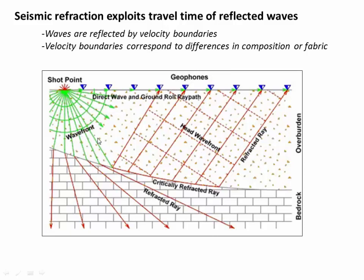Seismic refraction is a technique where humans tend to detonate synthetic explosions and then measure the waves coming back at the surface. By measuring and estimating the depths at which we're getting strong refractions or reflections, we can start to see big jumps in velocity which tend to correspond to geologic contacts or transitions in the subsurface, such as from a sedimentary overburden into a denser bedrock.